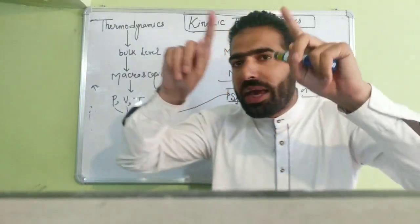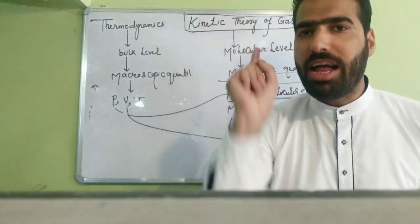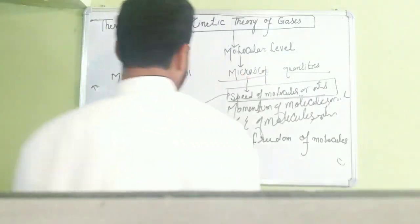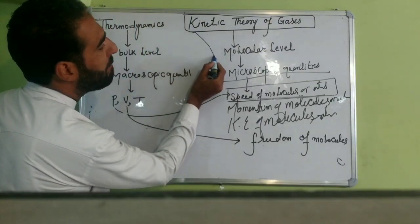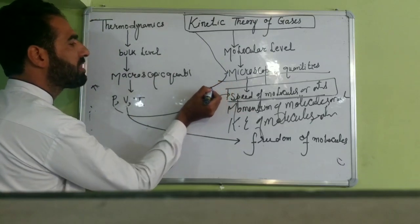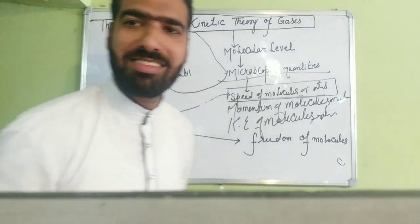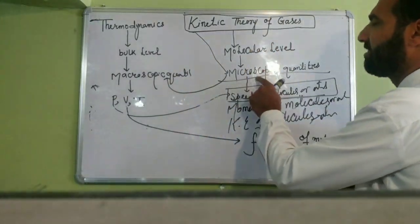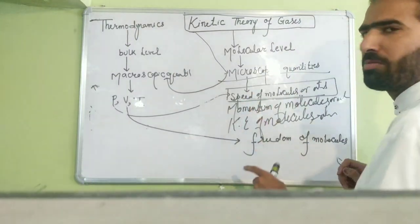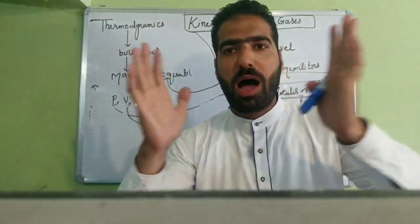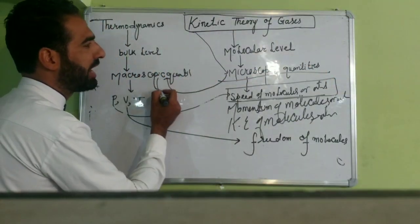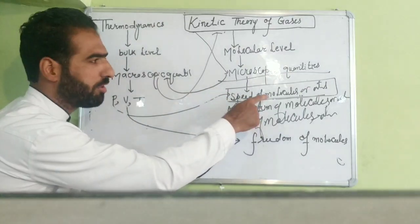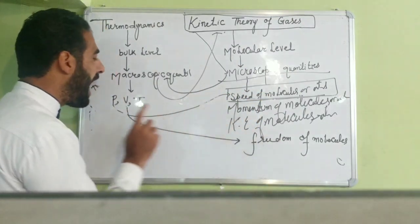So whatever macroscopic quantities thermodynamics has — their cause is what you need to know. Kinetic Theory of Gases is a branch of classical physics which relates the microscopic quantities — like speed of the molecules, momentum of the molecules, kinetic energy of the molecules — with the macroscopic quantities. The cause of pressure is due to speed of molecules and atoms; the cause of volume is due to the freedom of molecules.